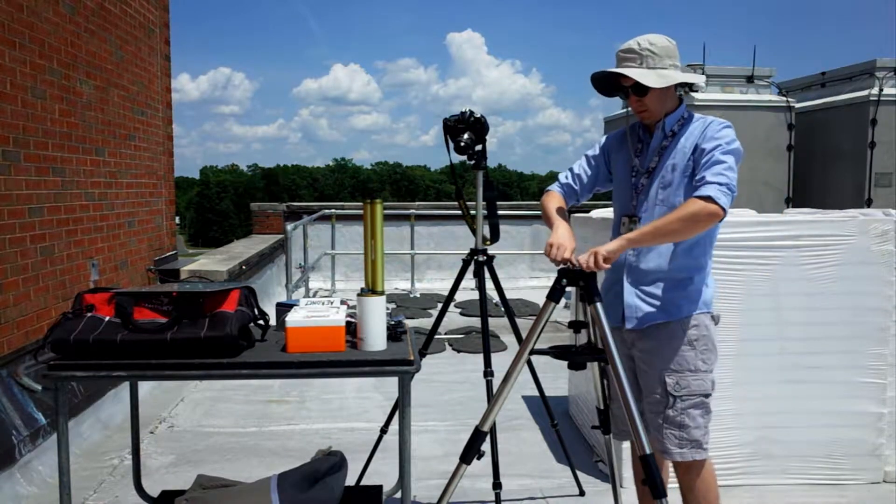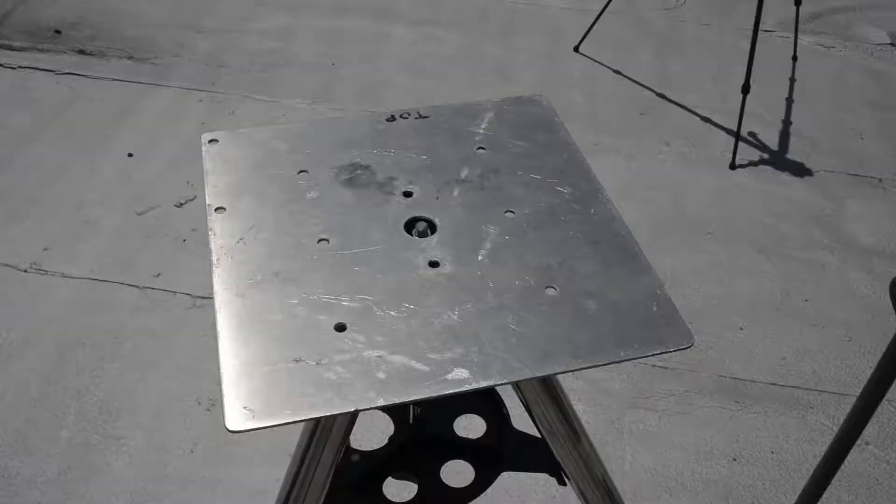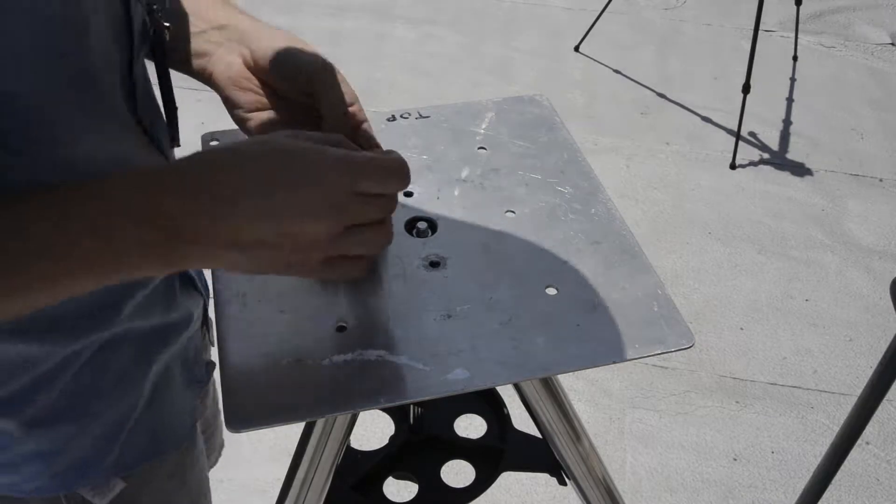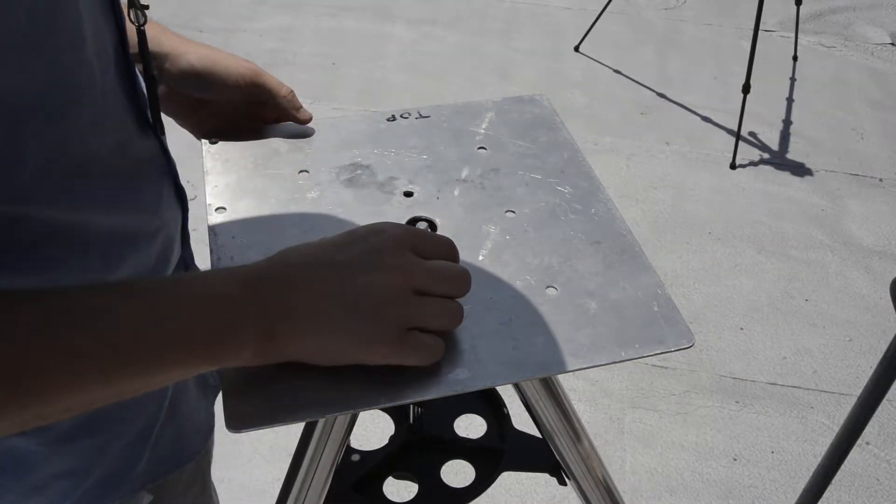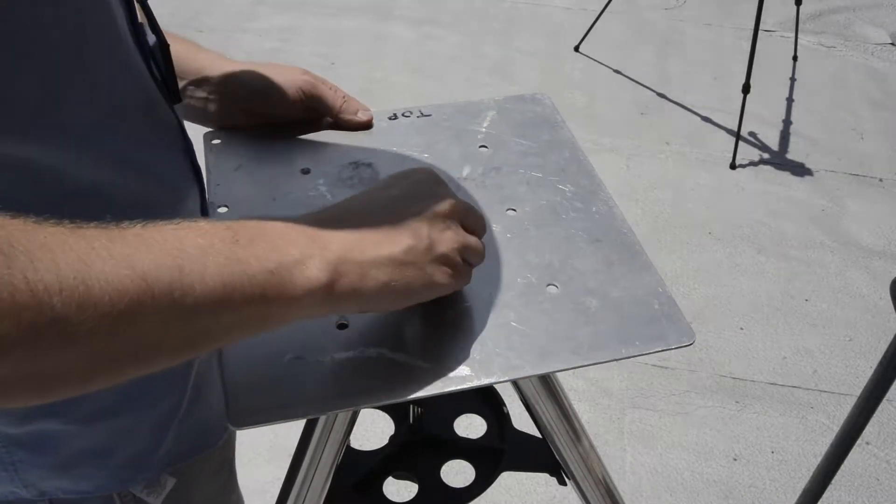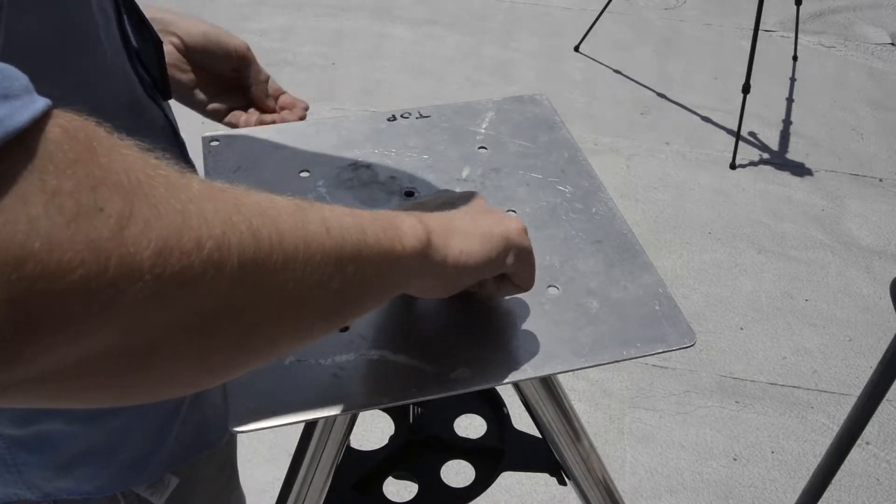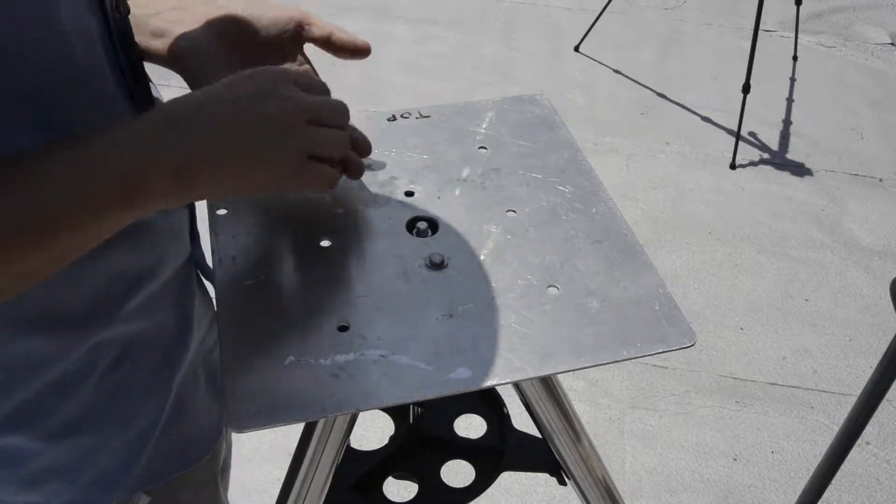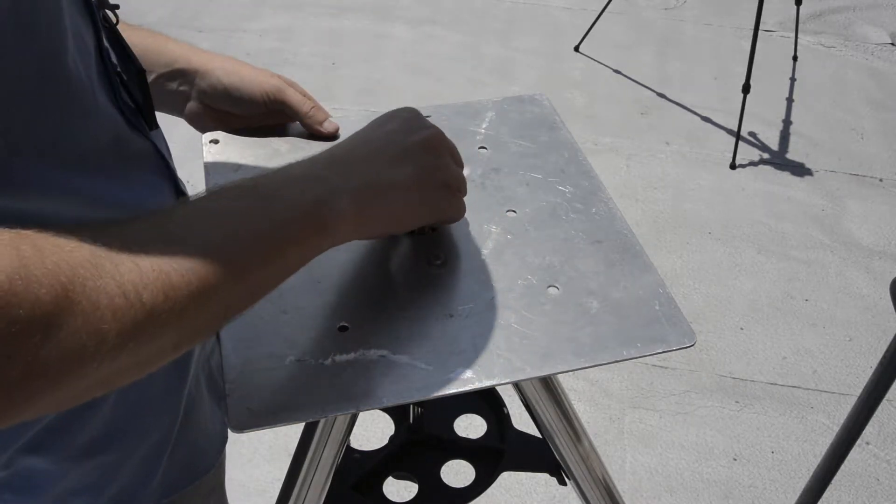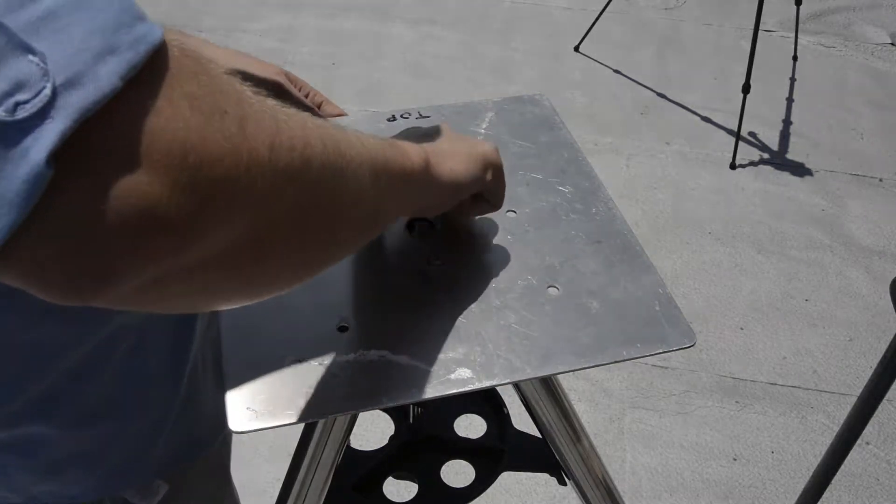The tripod I'm setting up here may be different from the mount at your site. As long as you have a way to bolt down the robot and a clear view of the sky, you're good to go. The setup process is much easier if you can get the mounting plate level before you put the robot on it.